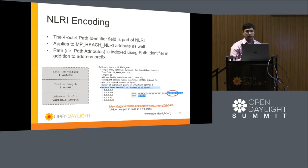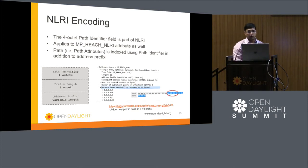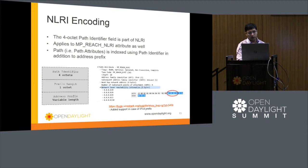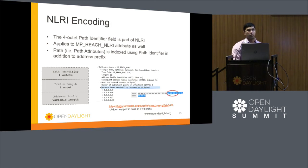Looking at the NLRI TLV format: earlier it was just the prefix length and the prefix. With ADPATH, a 4-byte path identifier is prepended, so the format is now: 4-byte path identifier, then prefix length, then the prefix. One thing to be careful about is that Wireshark may not correctly dissect this, since it traditionally expects only prefix length and prefix. There was a patch submitted to Wireshark around 2011 to add support for additional path capability for IPv4 prefixes, but it doesn't seem to work well. In Wireshark snapshots, the NLRI is interpreted incorrectly with wrong prefixes listed.